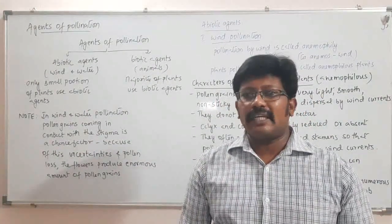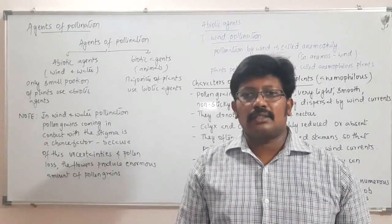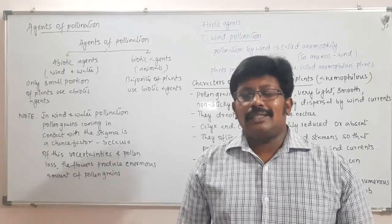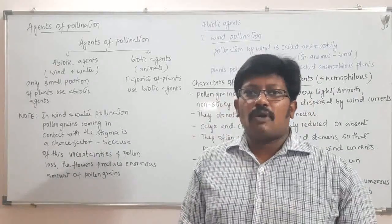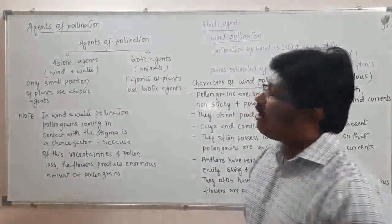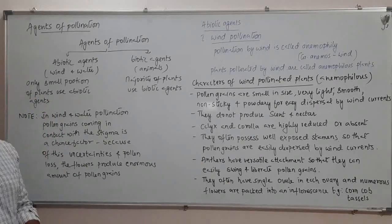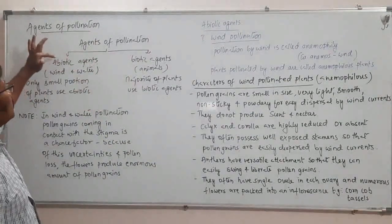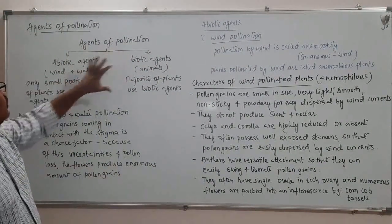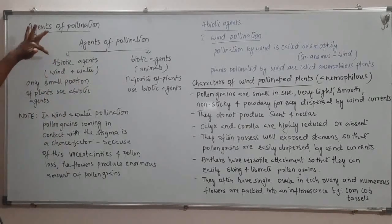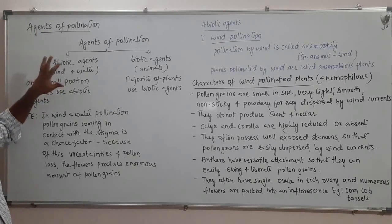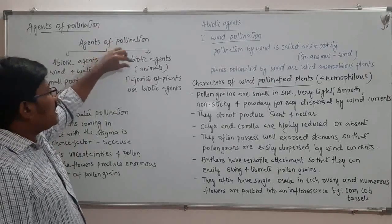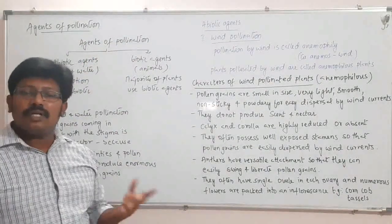Welcome back. In the previous video we studied about pollination and its types. In this video we will study how pollination is brought about by agents of pollination. These agents have been categorized into two: abiotic agents and biotic agents. 'A' stands for 'no' and 'biotic' stands for 'life', so abiotic agents do not have life — they carry pollen from one plant or flower to another.